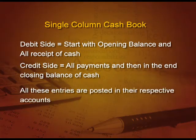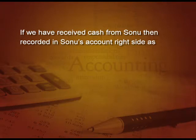Debit will always be more in cash, and credit will be less than or equal to debit. You cannot have a minus balance of cash — if you have money only then you can spend it. All these entries are posted in their respective accounts also. For example, if we have received cash from Sonu, then it will be recorded in the Sonu account on the right-hand side as 'by cash.' In the cash book on the debit side we write 'to Sonu' with the amount received, and in the Sonu account it will be on the right-hand side as 'by cash.'